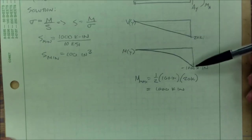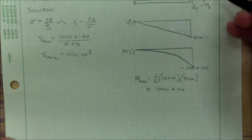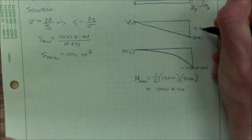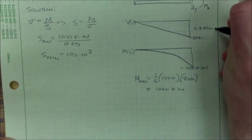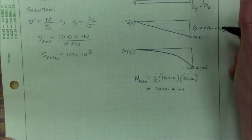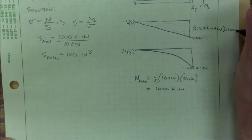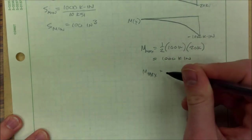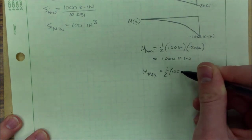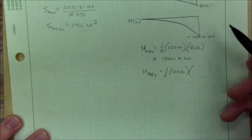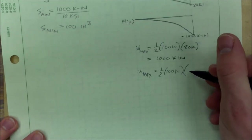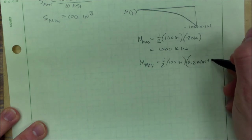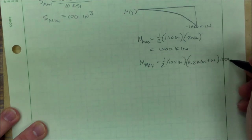So how would that change our shear moment diagram? That means that our force would have been 0.2 kip per inch plus w times 100 inches.